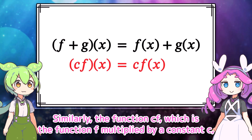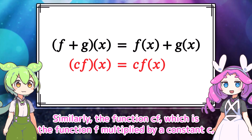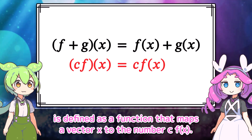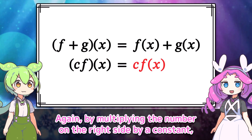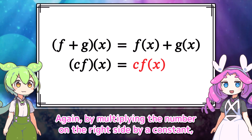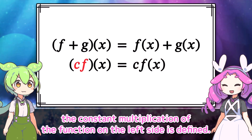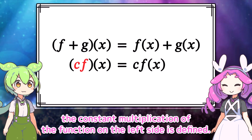Similarly, the function cf — the function f multiplied by a constant c — is defined as a function that maps a vector x to the number c·f(x). By multiplying the number on the right side by a constant, the constant multiplication of the function on the left side is defined.